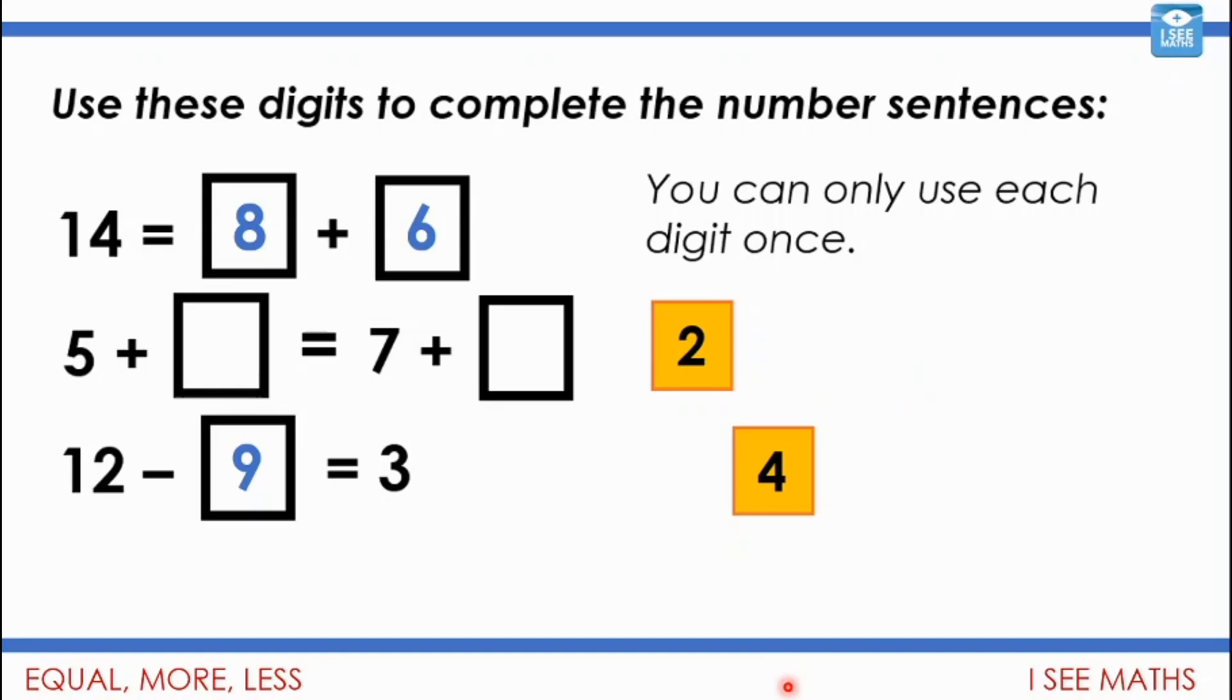And that leaves my 2 and my 4. And then I just need to think, well which way around so that both sides are the same? Well if I put my 4 there, 5 plus 4 that's 9. 7 plus 2 is 9. So this is 9 and that's 9. And yes, now they are the same.